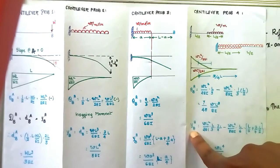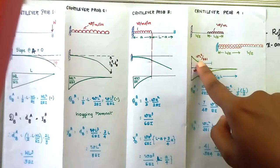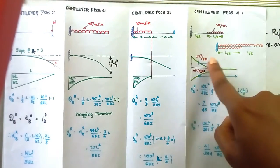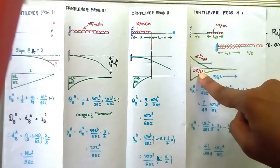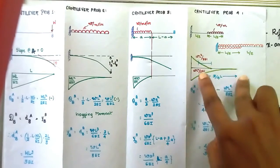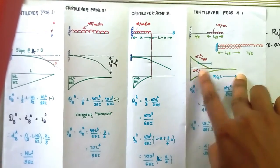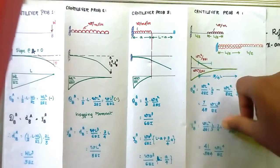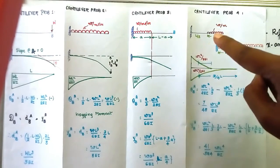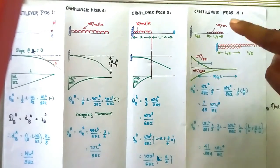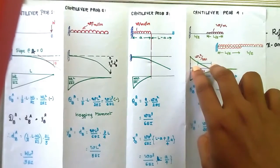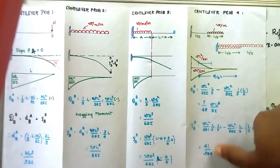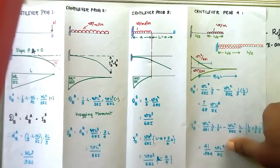Next we calculate the deflection, which is the moment of the area of the bending moment diagram between A and B with respect to B. The calculation involves WL squared by 8EI into L by 6 into the centroidal distance 3 by 4 of L from B, combined with the other diagram part contributions. Problem solved.